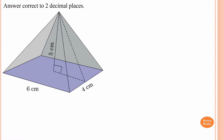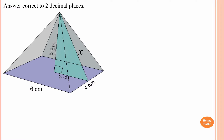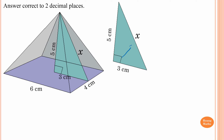First we construct a triangle so we can find the perpendicular height. This side from here to here is six centimeters, so this side must be half of six, which equals three centimeters. Now we find the value of x. Since this is a right-angle triangle, we use Pythagoras' theorem. x is the hypotenuse, so x² = 5² + 3², which gives 34.